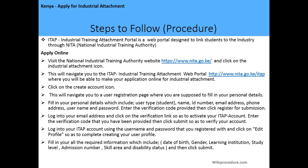Fill in your personal details, which include: user type (select 'Student'), name, ID number, email address, phone number, postal address, username, and password. Enter the verification code provided and click Submit. Then log into your email address and click on the verification link that was sent to you to activate your ITAP account. Enter the verification code and click Submit to verify your account.